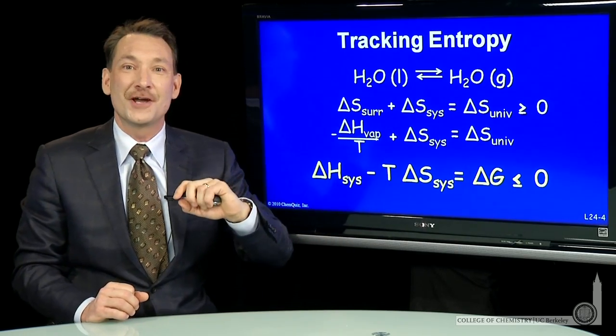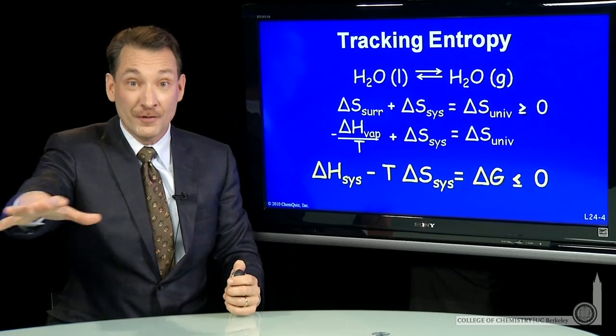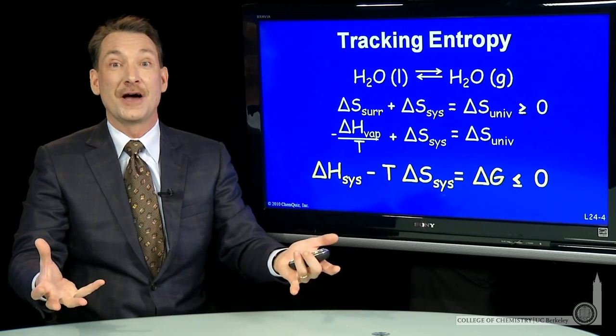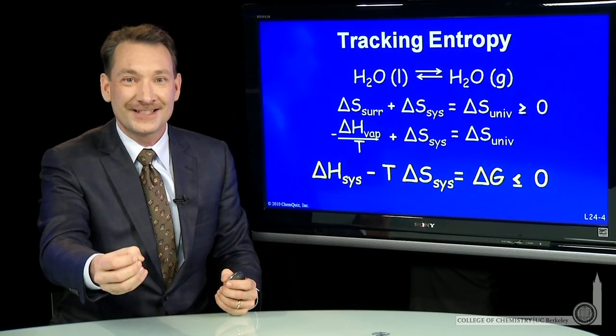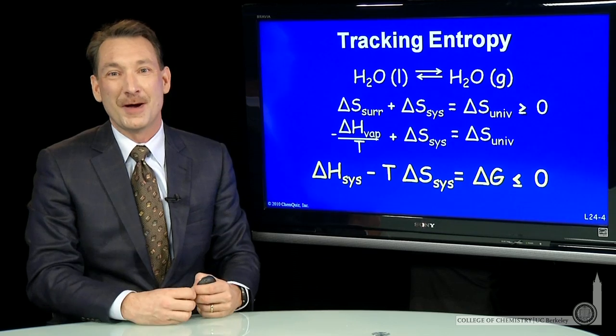So now we have a system variable that determines the overall entropy, system plus surroundings, and can allow us to predict which direction is favored by the universe.